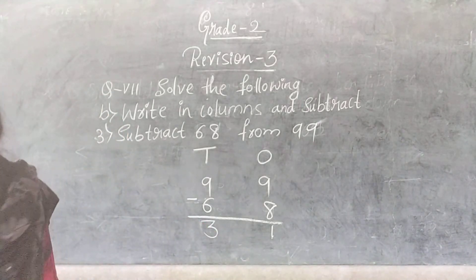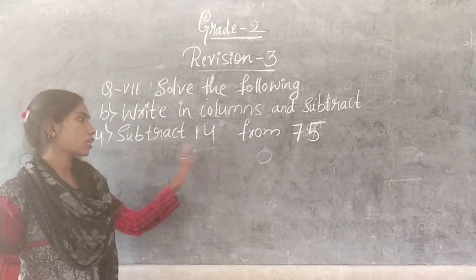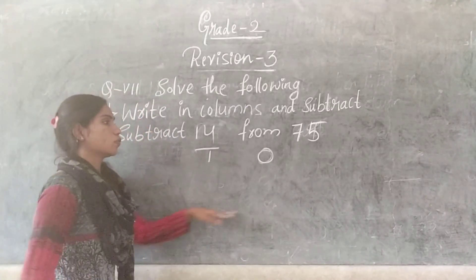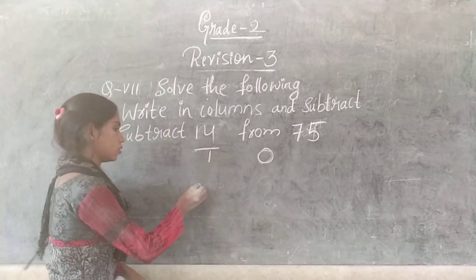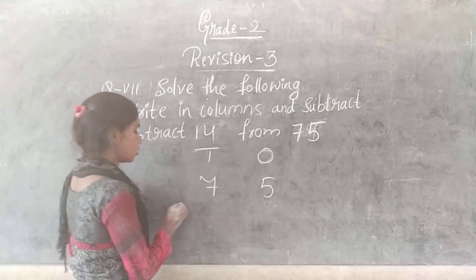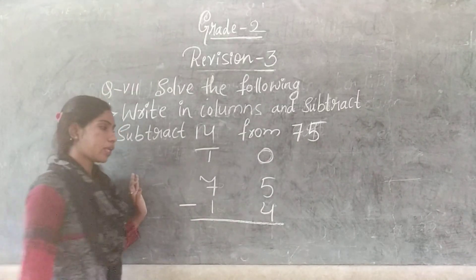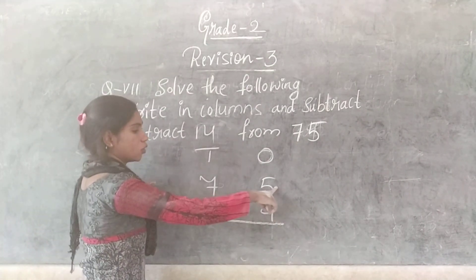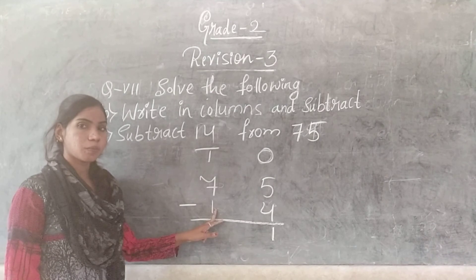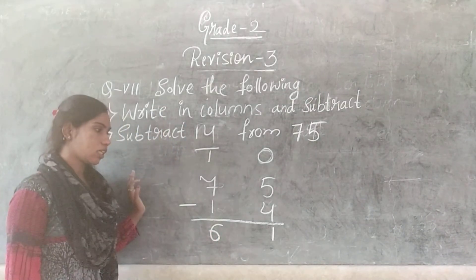The fourth one is subtract 14 from 75. Write 75, then write 14 below it. Subtract: 5 minus 4 is 1, and 7 minus 1 is 6. The answer is 61.